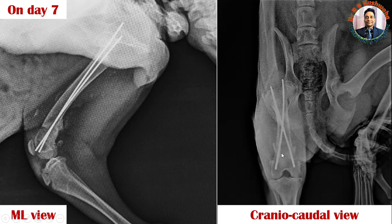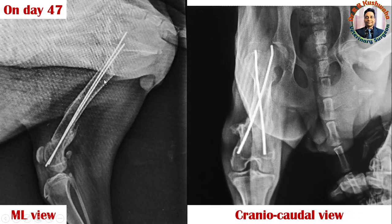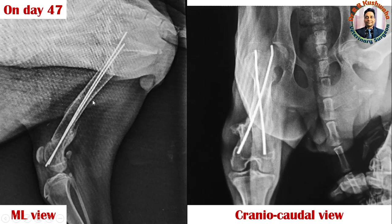In the craniocaudal view, the quality of this radiograph is not up to the mark, but you could appreciate a little bit of cortical line union. After day seven, the owner did not turn up for further follow-up examination because the animal was doing well, except the animal was not able to bear weight completely because the range of motion of the stifle joint was affected a little bit, as we performed this procedure by opening the stifle joint — which definitely hampered the range of motion.